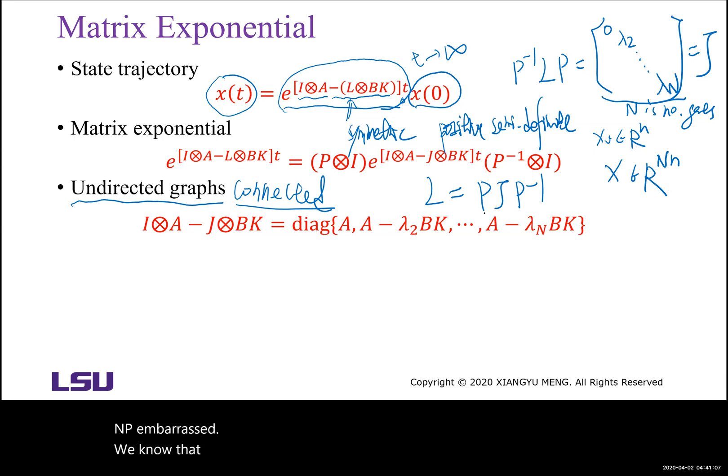We know the P matrix will be all the eigenvectors associated with the eigenvalues here. So each column P will be one eigenvector. Then we have the eigenvector. Then let's not do exponential first. Then we know the eigenvector matrix, let's look at this part. Then L can be written as P diagonal form P inverse, then connect BK.